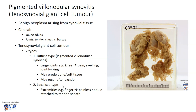The other type is the localized type, which usually just occurs as a nodule and tends to favor the extremities. For example, it can arise in the finger as a painless nodule attached to the tendon sheath.